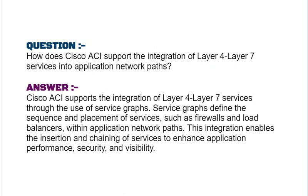Our interview question based on implementing Cisco Application Centric Infrastructure is: how does Cisco ACI support the integration of layer 4 and layer 7 services into application network paths? Your answer should be: Cisco ACI supports the integration of layer 4 and layer 7 services through the use of service graphs. Service graphs define the sequence and placement of services such as firewalls and load balancers within application network paths. This integration enables the insertion and chaining of services to enhance application performance, security, and visibility.